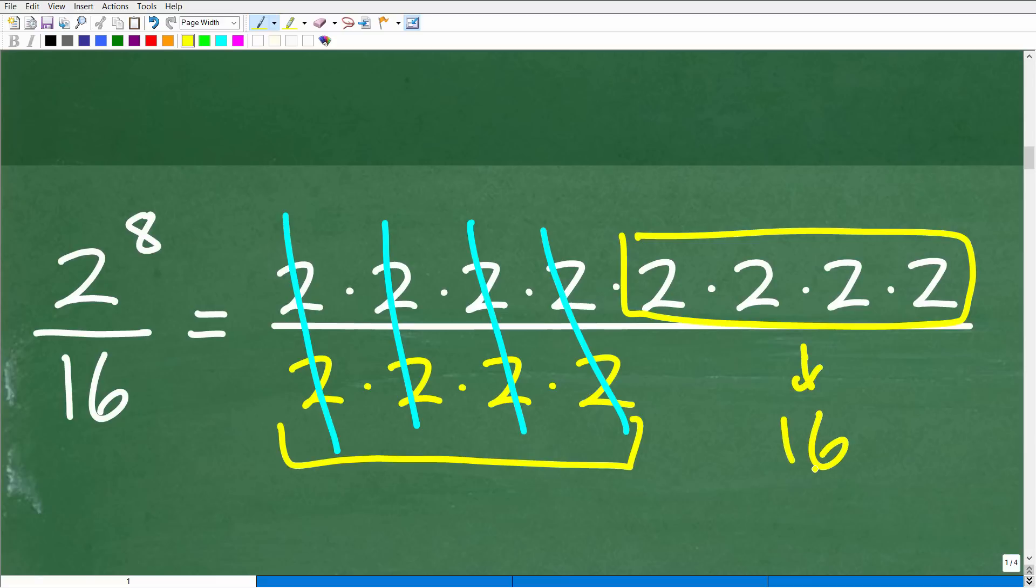Okay, now of course you could have taken 2 to the 8th, figured out what that is, and divided by 16. So if you got 16, that's great. Or you could have just looked at these factors and figured it out differently. But really what you want to do is think of things, and when you see a power and you're asked to work with a power, something like this, 2 to the 8th power.